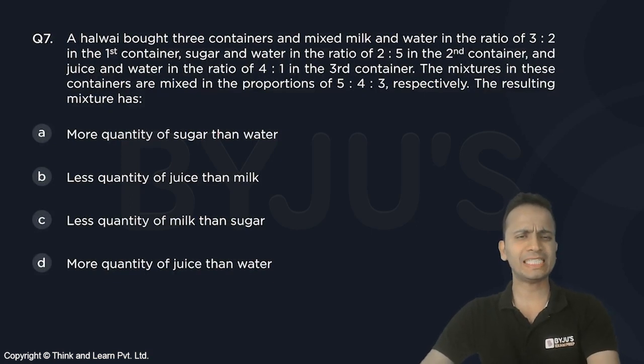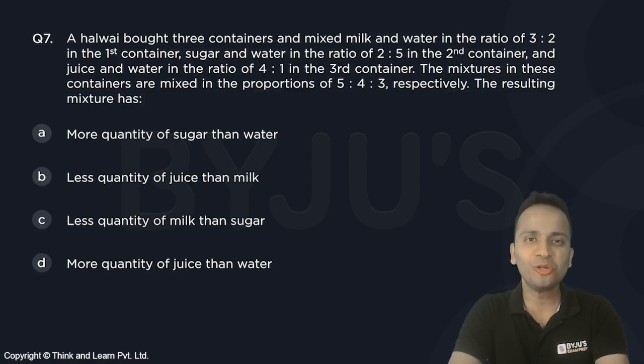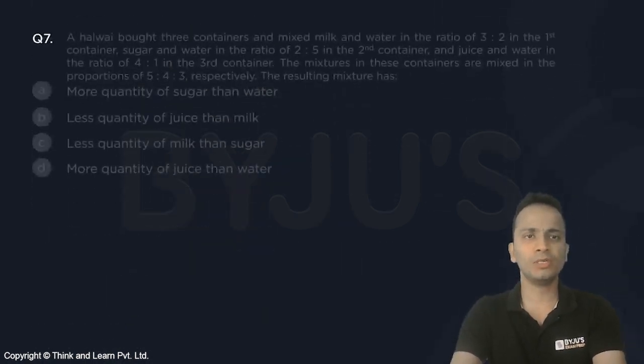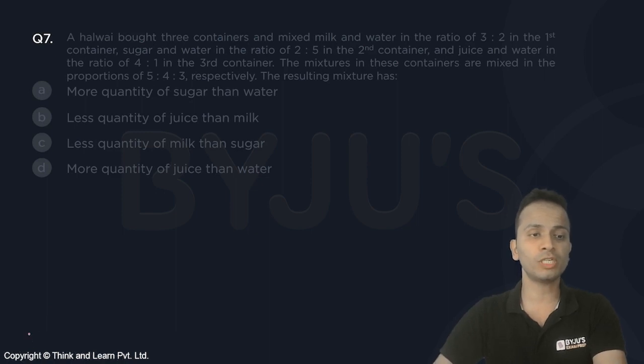Now question number seven. You just need to be slightly careful in dealing with all these ratios. A very simple question. These three containers are in the proportion of 5 is to 4 is to 3, so I'll start by assuming the volumes of these three containers as 5x, 4x, and 3x.